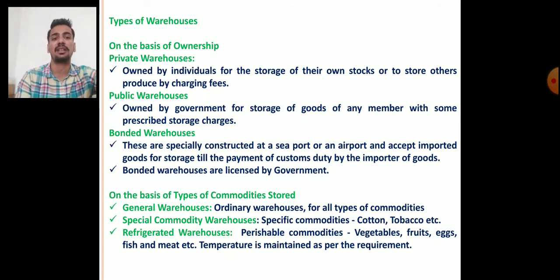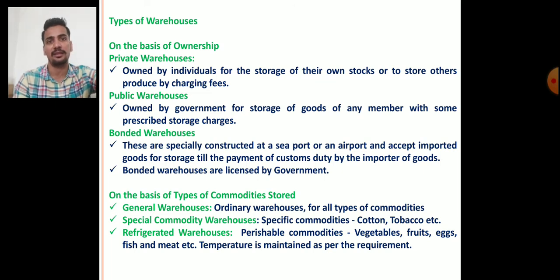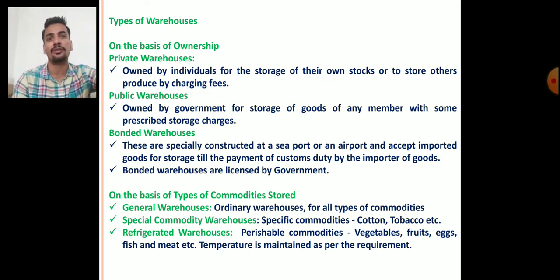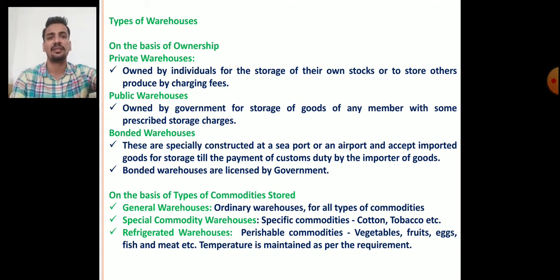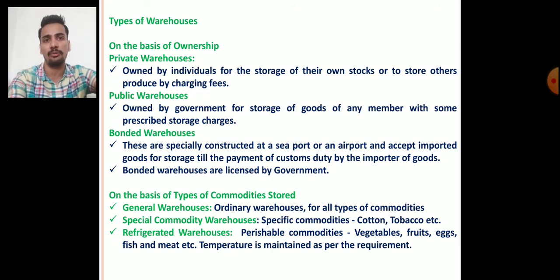Refrigerated warehouses are also specially constructed, maintaining climatic factors such as temperature and humidity. These warehouses are also known as cold storages. Perishable commodities like vegetables, fruits, eggs, fish, and meats are stored in such warehouses.